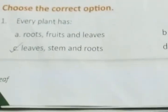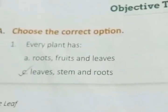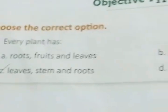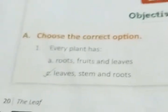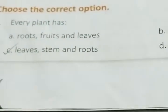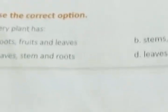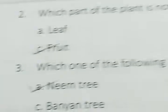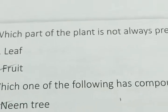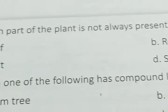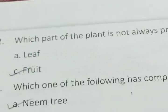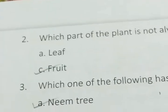Question one: choose the correct option — every plant has... The answer will be leaves, stem, and roots. Next, which part of the plant is not always present? There are four options, but the answer will be fruit.